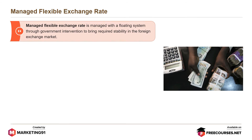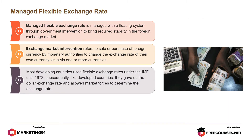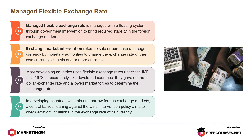Managed flexible exchange rate is managed within a floating system through government intervention to bring required stability in the foreign exchange market. Exchange market intervention refers to the sale or purchase of foreign currency by monetary authorities to change the exchange rate of their own currency vis-à-vis one or more currencies. Most developing countries used flexible exchange rates under the IMF until 1973. Subsequently, like developed countries, they gave up the dollar exchange rate and allowed market forces to determine it. In countries with thin and narrow foreign exchange markets, a central bank's leaning against the wind intervention policy aims to check erratic fluctuations in the exchange rate.